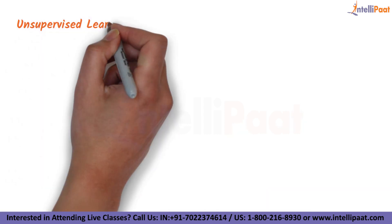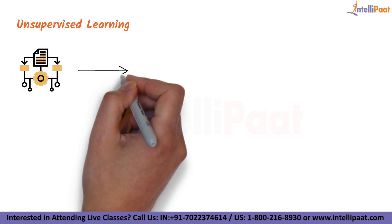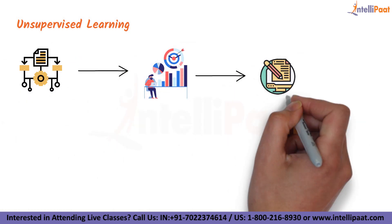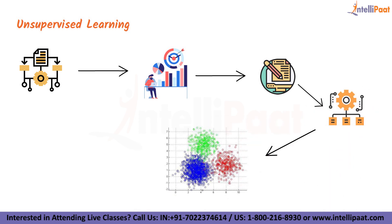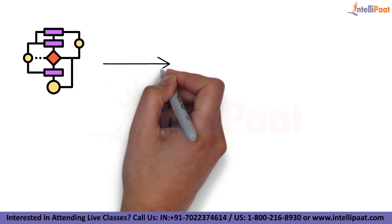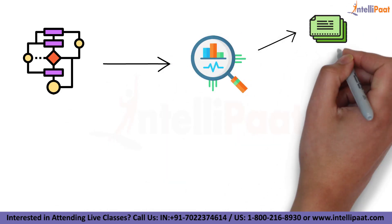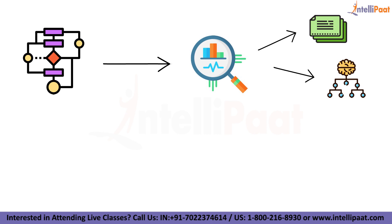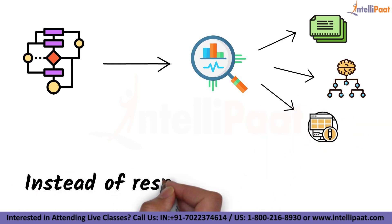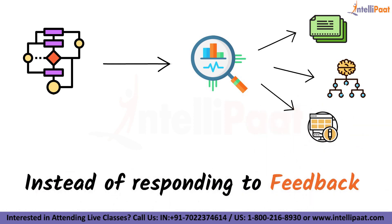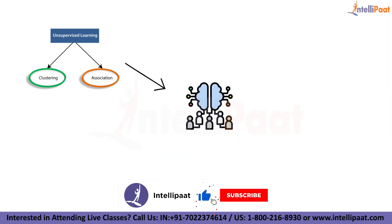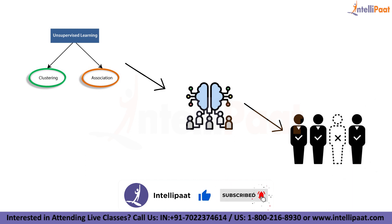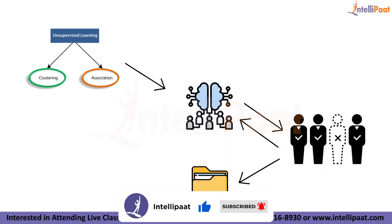The second method is called unsupervised learning. This method's learning algorithm takes a set of data that contains only inputs and finds structure in the data, like grouping or clustering of data points. The algorithms therefore learn from test data that has not been labeled, classified, or categorized. Instead of responding to feedback, unsupervised learning algorithms identify commonalities in the data and react based on the presence or absence of such commonalities in each new piece of data.